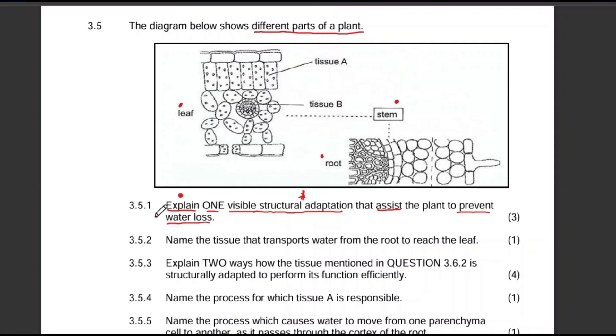What we can see from the diagram is the presence of a cuticle. There is a cuticle over here. The cuticle is a waxy layer that is waterproof, so it's there to prevent water loss. Let's see how you'll get the three marks. The adaptation is the presence of a cuticle - that's the cuticle. It is a waxy layer and it is waterproof. You mentioned the structure and the adaptation - that's how this will be marked and how you'll get your three marks.